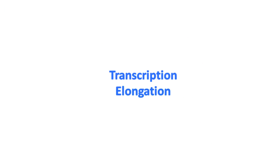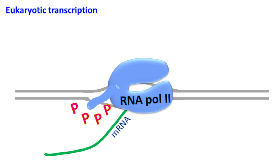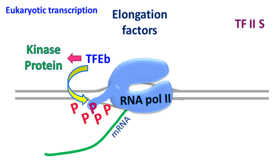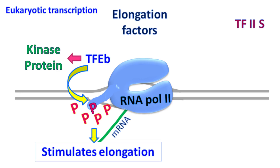Transcription elongation. Once RNA polymerase has initiated transcription, it shifts into the elongation phase. The transcription factors that help in elongation are called elongation factors. There are two such elongation factors: TFEB and TF2S. TFEB is recruited to the polymerase by transcription activators. TFEB is a kinase protein that phosphorylates serine residues in the C-terminal domain of the polymerase, which stimulates elongation.